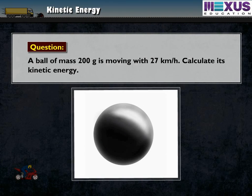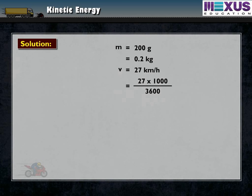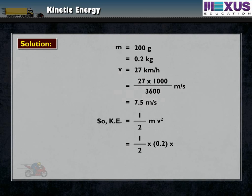Let us solve one problem. A ball of mass 200 grams is moving with 27 kilometers per hour. Calculate its kinetic energy. Solution: Given mass M = 200 g = 0.2 kg. Velocity V = 27 km/h = 27 × 1000 ÷ 3600 m/s = 7.5 m/s. So, kinetic energy = ½MV² = ½ × 0.2 × 7.5² = 0.1 × 56.25 = 5.625 joules.